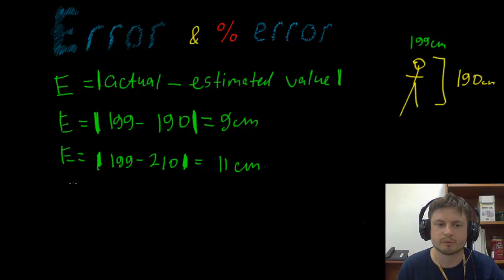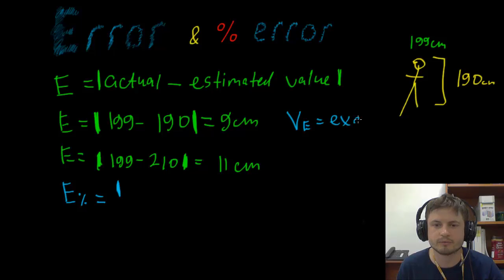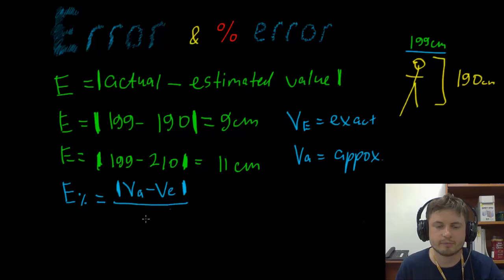Now, your book also has something called percentage error. And that's something more common. You'll see this a lot more often. And this is also E. But I like to write it as E with a little percentage here. And the way it's found is by finding absolute value difference. The book likes to use VE for actual or exact value. In other words, it's this 199 centimeters. VA is your approximation. So here, your actual percentage error is going to be VA minus VE, absolute brackets, divided by exact value, and then multiplied by 100%.